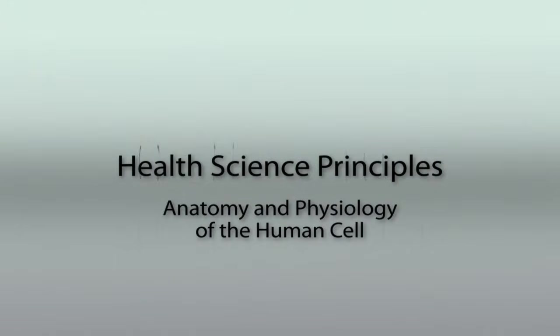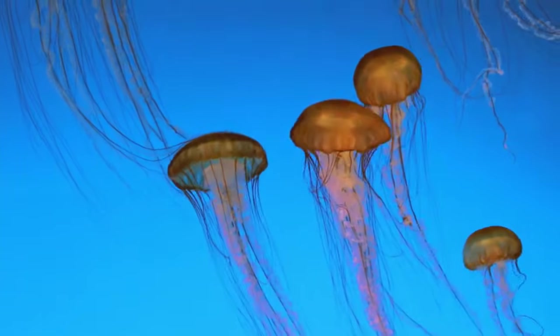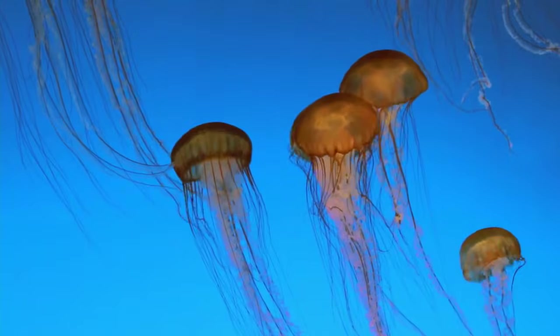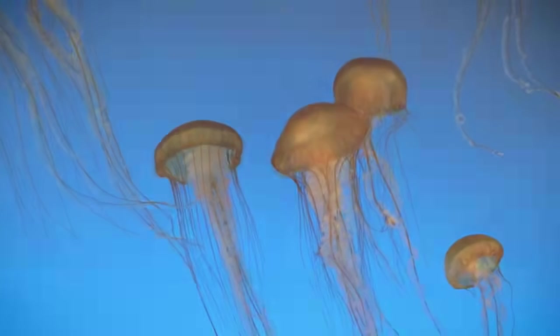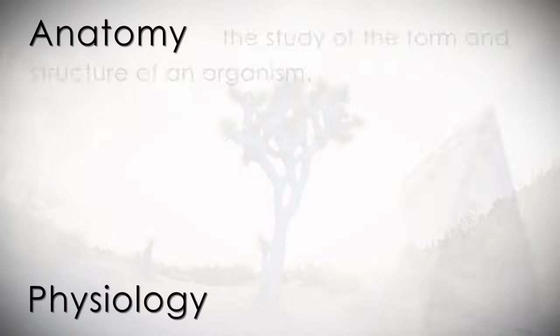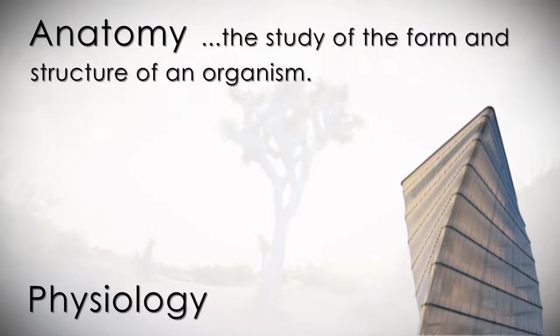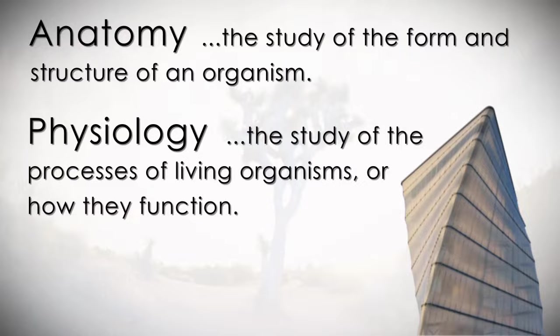The anatomy and physiology of the human cell. Before we get into the anatomy and physiology of the cell, we need to first understand the words themselves. Anatomy is the study of the form and structure of an organism. Physiology is the study of the processes of living organisms, or how they function.